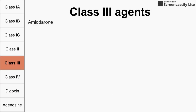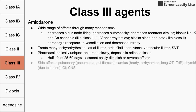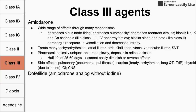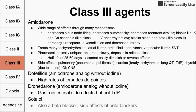Amiodarone has many effects, can treat a range of arrhythmias, and has numerous side effects. There are a couple of amiodarone analogs that do not cause thyroid problems. Finally, sotalol is a beta blocker that has similar effects to class 3 agents — it also blocks potassium channels.